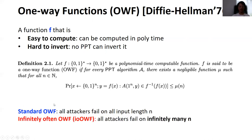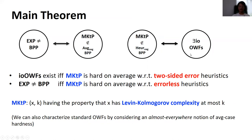Informally, given input X, it is easy to go from X to F(X), but it is hard to go back to X from the output F(X). More formally, F is a one-way function if, given a random string X of N bits, we let Y be F(X), and for any PPT algorithm A, the probability that A on input Y outputs a pre-image of Y is at most a negligible amount. We also consider a notion of infinitely-often one-way functions, where the inversion requirement is relaxed, and we ask all attackers fail on infinitely many input lengths N. Our main theorem says the existence of io-OWFs is equivalent to MKTP being hard on average with respect to two-sided error heuristics, and EXP not equal to BPP if and only if MKTP is hard on average with respect to errorless heuristics. Here MKTP is the language of pairs (X, K) having the property that X has Levin-Kolmogorov complexity KT(X) at most K.